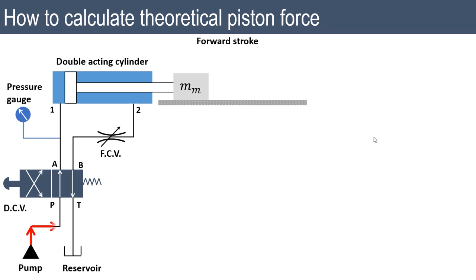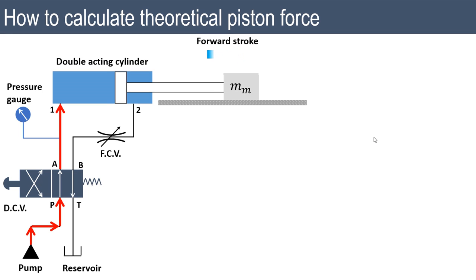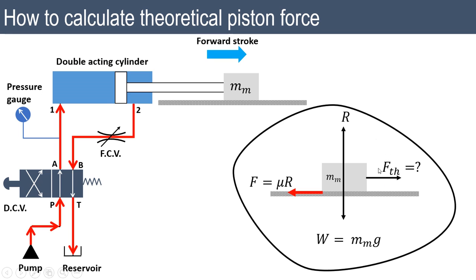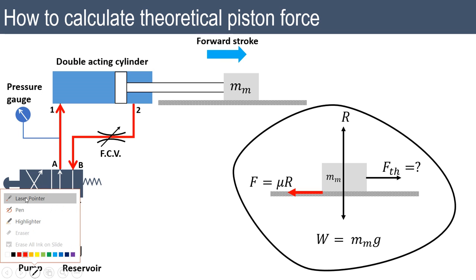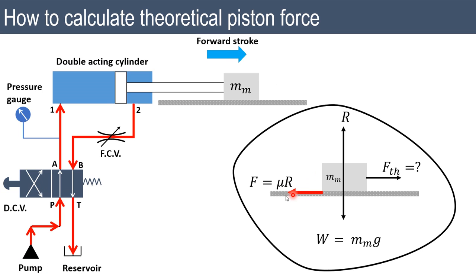Let us first simulate this hydraulic circuit. We have a push button operated direction control valve in the right envelope mode and the mass is moving in the forward direction. Fluid from the other side passes through the flow control valve and goes to the reservoir. We need to find the theoretical piston force required to move this mass. When stationary, it is subject to static friction; when moving, to sliding friction — and the frictional force acts opposite to the direction of motion.